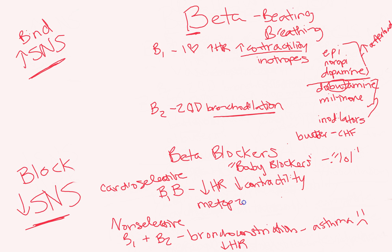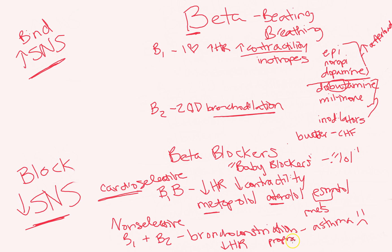There are three cardioselective beta blockers to memorize: metoprolol, atenolol, and esmolol. My trick: if you met someone who's a 10 on a 0–10 scale and found them mesmerizing — rearrange those letters — you could be 'cardioselective' towards them. So metoprolol, atenolol, esmolol — mesmerizing — are cardioselective. Everything else ending in '-lol' is non-selective: propranolol, labetalol, carvedilol — any other '-lol' you come across is probably a non-cardioselective beta blocker.